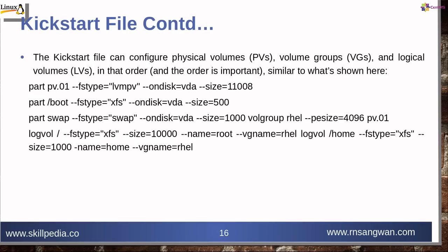The kickstart file can configure physical volumes (PVs), volume groups (VGs), and logical volumes (LVs) — in that order, which is important. For example: part pv.01 --fstype=lvmpv --ondisk=vda --size=[size]; part /boot --fstype=xfs --ondisk=vda --size=500; volgroup rhel --pesize=4096 pv.01; and then logvol / --fstype=xfs to specify LVM directives in the kickstart file.